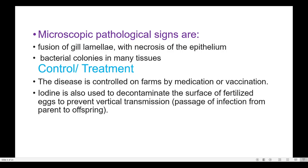Control or treatment: The disease is controlled on farms by medication or vaccination. Iodine is also used to decontaminate the surface of fertilized eggs to prevent vertical transmission.